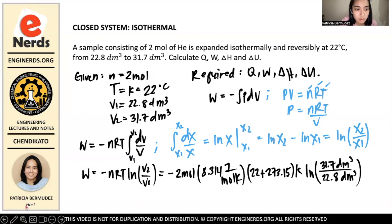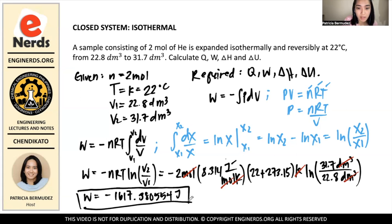ln v2 which is 31.7 DM cube over 22.8 DM cube. So now we will cancel the units. The moles cancel, the Kelvin cancels, and the units inside the ln cancel each other. So the unit for work becomes joules. Let's calculate together: negative 2 times 8.314 times 22 plus 273.15, and then ln of 31.7 over 22.8. Then your work is negative 1617.380554 joules. We have our value for work.